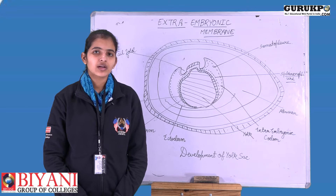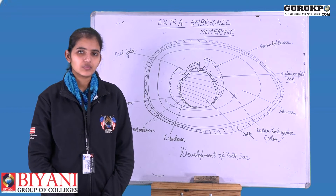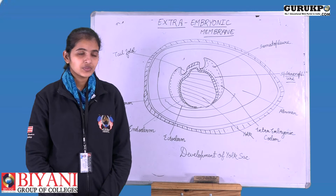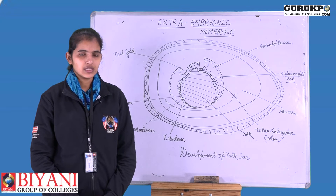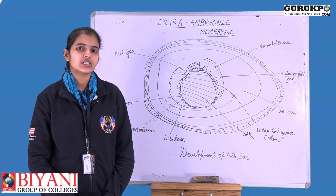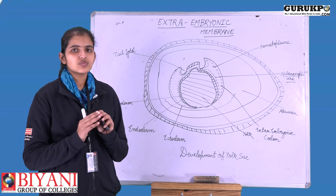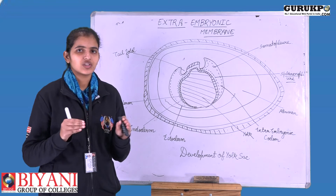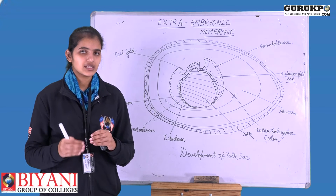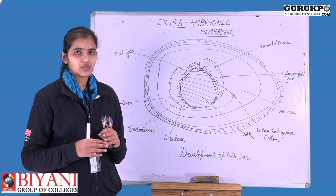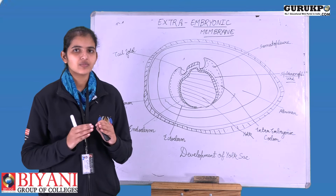Extra-embryonic membranes are membranes which are formed around the embryo. These are not part of the embryo but are developed around it for its protection and better functioning. These membranes are formed to protect the embryo, but the main function is to provide a specific kind of atmosphere around the embryo for its proper development and care.